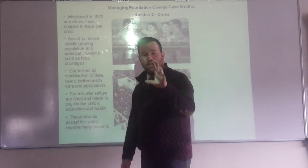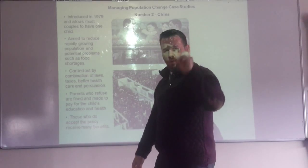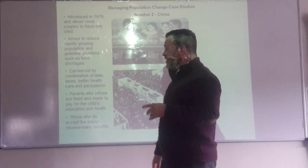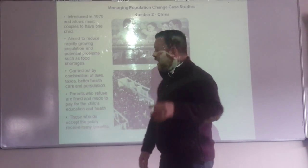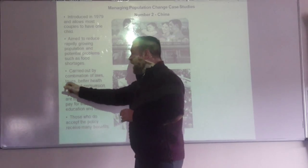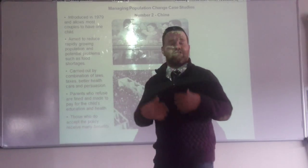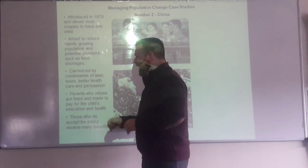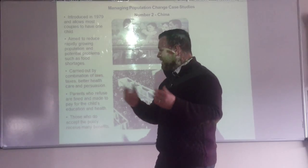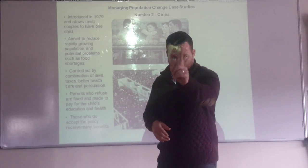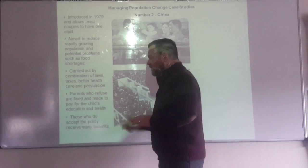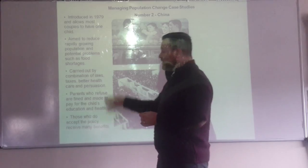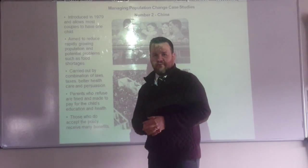They carried it out by a combination of laws — they made it the law that you can only have one child. If you had more than one child, you would be fined, or you might even end up going to prison. They encouraged people to have one child by giving reduced taxes — tax breaks to people who only had one child. Those people also got access to better healthcare and standards of education for their one child. Parents who refused were fined and made to pay for their child's education and health, whereas those who accepted the policy received many benefits.